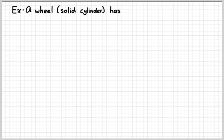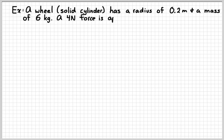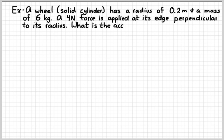All right, so here's another simple example. We've got a wheel. And we're going to say that this wheel is a solid cylinder, so like a pizza stone or something like that. It has a radius of 0.2 meters, mass of 6 kilograms. We apply a 4 newton force at the edge of the wheel, perpendicular to its radius. We want to know what is the acceleration of the wheel. So hit the pause button for a minute. See if you can just work through that, find the angular acceleration of the wheel. And then press play, and I'll run through my solution and see if you did it the same way I did.